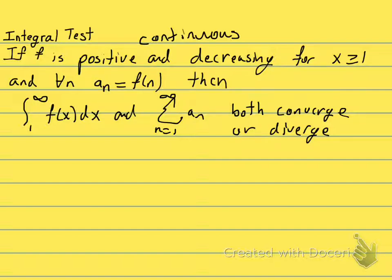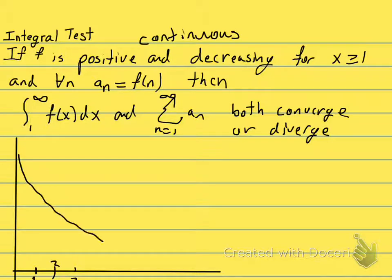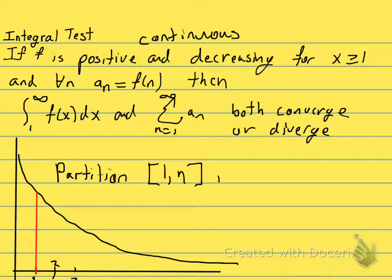So what we'll do is we will draw a picture, so there's our function f decreasing, and what we're going to do is we're going to partition this interval into unit length, so everything is going to have length 1.